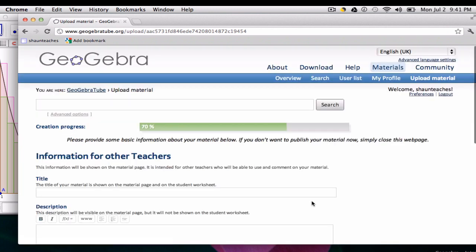And it uploads further, 70%. But now we want to enter in information for other users and teachers. For example, the title. Here this is a test of uploading of a dynamic worksheet.